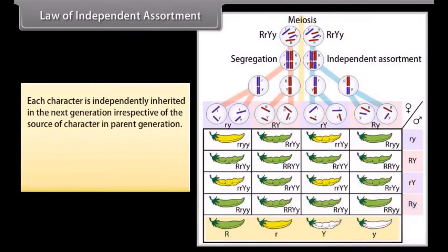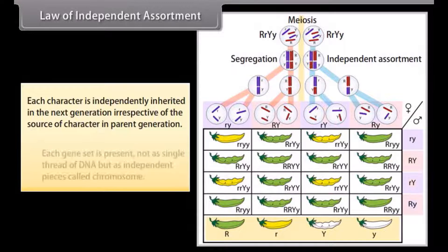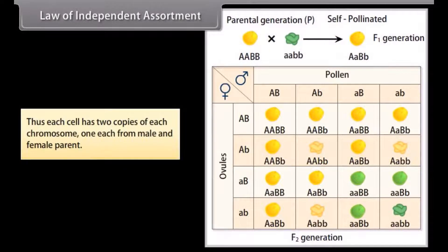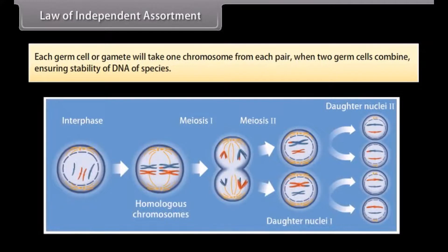Law of Independent Assortment: Each character is independently inherited in the next generation, irrespective of the source of the character in the parent generation. Each gene set is present not as a single thread of DNA but as independent pieces called chromosomes. Thus each cell has 2 copies of each chromosome — one each from male and female parent. Each germ cell or gamete will take one chromosome from each pair when two germ cells combine, ensuring stability of DNA of the species.